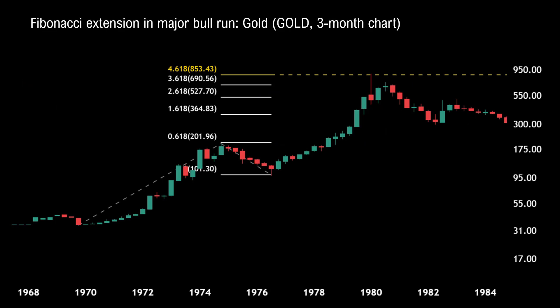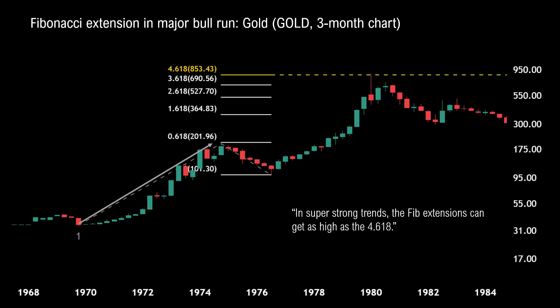In major bull runs, the price can extend to much higher Fibonacci levels than 0.618. In super strong trends, Fib extensions can get as high as 4.618. That's what we saw with gold in the 1970s and 80s on the three-month chart. The first move up from 0.1 to 0.2 was big, then the price pulled back from 0.2 to 0.3. But the next leg up from 0.3 to 0.4 was the real moneymaker — it was 461.8% as big as the first leg up from 0.1 to 0.2.